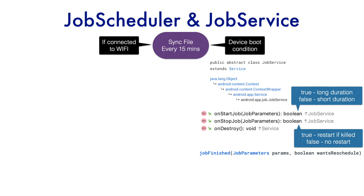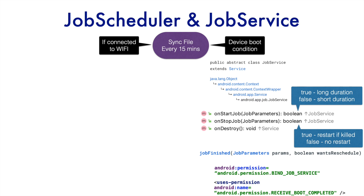When you create a JobService you extend this JobService class. You also need to take care of things in the manifest file — for example, you need to declare this service with the BIND_JOB_SERVICE permission, which should be familiar from JobIntentService. And since we want our service to be enabled as soon as the device boots, we need to add the RECEIVE_BOOT_COMPLETED permission, which notifies the application whenever the device is booted or switched on.